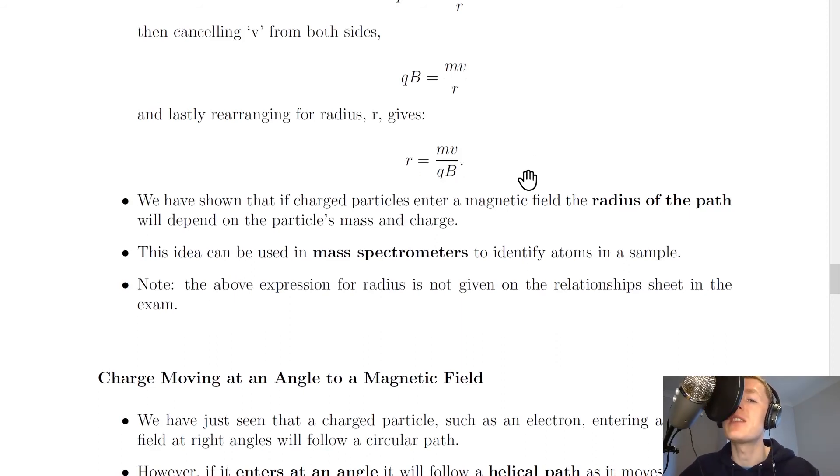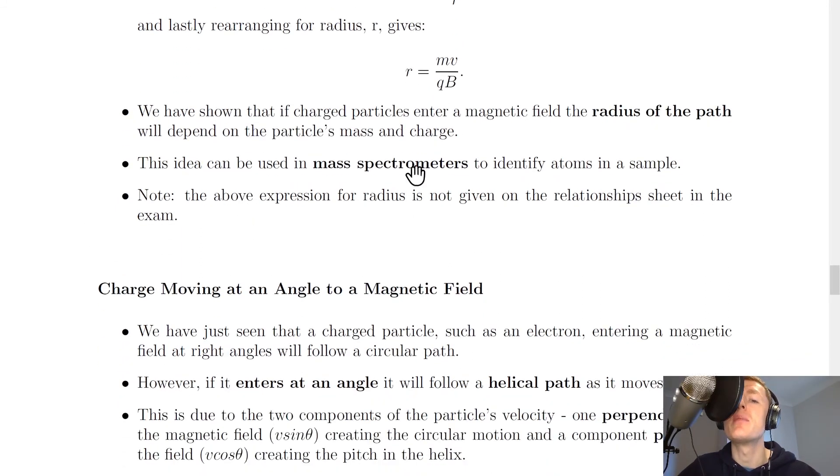It's very common for you to be asked to derive this or to calculate the radius travelled from the charged particle. We have shown that if charged particles enter a magnetic field of magnetic induction B, then the radius of the path r will depend on the particle's mass m and its charge q, as well as the speed that it's doing. This idea can be used in mass spectrometers to identify atoms in a sample.